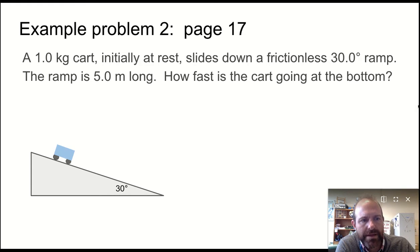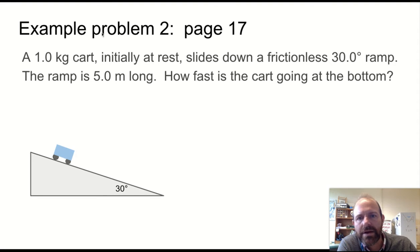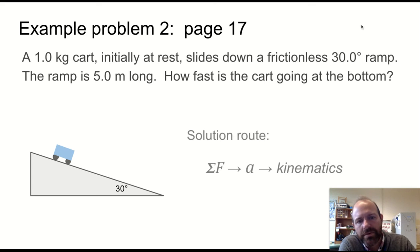This example problem is an object rolling down a ramp, a cart at rest on a ramp. This is a very common problem that we talk about. In fact, we did a demo of two carts rolling down a ramp, and we saw that the mass didn't make a difference. So how fast is the cart going at the bottom is the question. That seems like a kinematics question, but in order to do that, we would need to know quite a few things. So what we're going to do is we're going to start by finding the net force, finding then the acceleration, and then using acceleration and our kinematics relationships to answer the question.